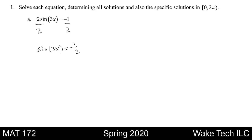Now in order to get the 3x out of sine — in order to get rid of the sine — we'll have to first find out where sine is equal to negative one-half on the unit circle. Since sine is our y value, we're going to find values here and here on negative one-half. That is 7 pi over 6 and 11 pi over 6.